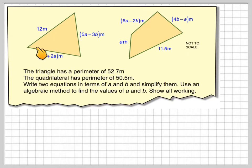In this video we've got a triangle and a quadrilateral. The triangle has a perimeter of 52.7 meters, and the quadrilateral has a perimeter of 50.5 meters. Write two equations in terms of A and B, simplify them, and use an algebraic method to find the values of A and B.